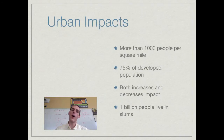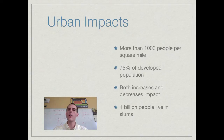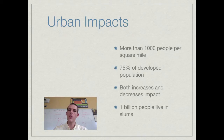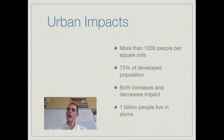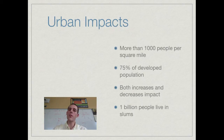Now let's talk about urban impact. An urban area is one with more than 1,000 people per square mile. If you live in a developed country, good chances are you live in a city — 75% of people in developed countries do. City dwelling can both increase and decrease per capita impact. The average city dweller probably drives less since everything is nearby or they can take public transit, giving them a smaller eco footprint. But concentrating many people together also concentrates waste in one area, which is really hard on the environment.